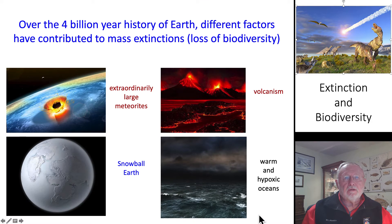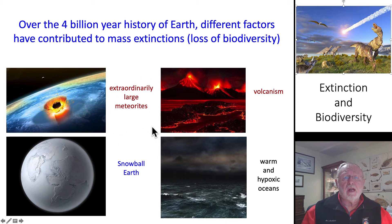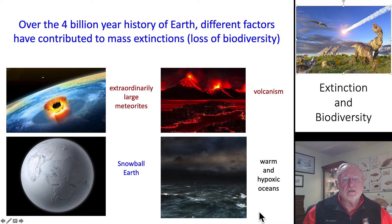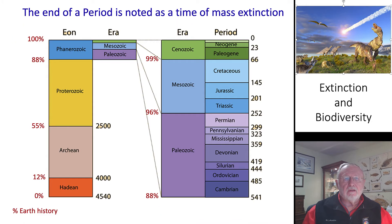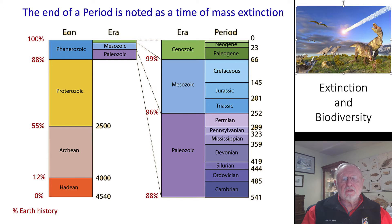Over the last 4 billion years of history, different factors have contributed to mass extinctions. We note these mass extinctions through a loss of biodiversity. We've had extraordinarily large meteorites or asteroids crash into the planet, snowball Earth events, periods of volcanism, and warm and hypoxic oceans — hypoxia being low oxygen concentrations. The end of a period in the geological chart marks a time of mass extinction, associated with an event inducing that mass extinction.